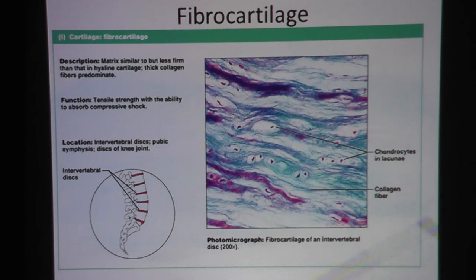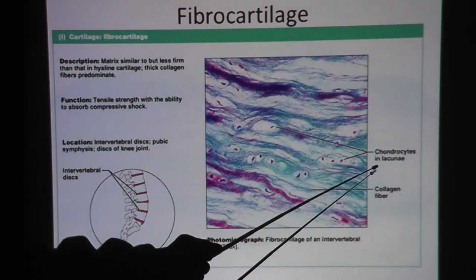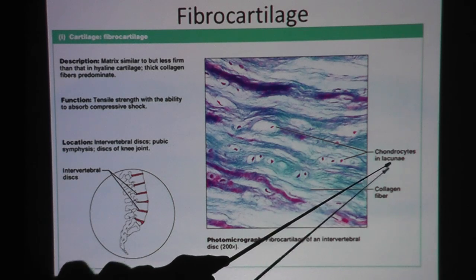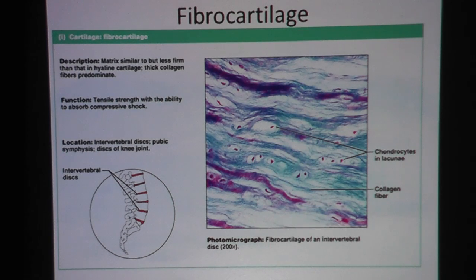Let's talk about the cell. Because this is cartilage, the cell found in cartilage is called chondrocyte. Chondro means cartilage, cyte is cell — so chondrocyte is cartilage cell. Something unique to cartilage would be lacuna. The chondrocyte lives in the lacuna. Later on, when we talk about bone, which is very much similar to cartilage, you will also see bone cells in lacuna as well.